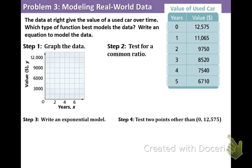Example three, modeling real world data. The data at right gives the value of a used car over time. Which type of function best models the data? Write an equation to model the data. Take a moment and just look at the table. Look at the years column as well as the values column and see what's going on. Hopefully you're realizing off the bat that it is not linear. Because take a look at the y values. They are not going down by the same number. So we can write that immediately. Not linear.